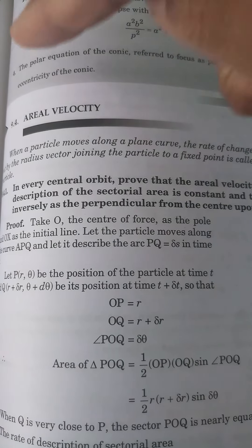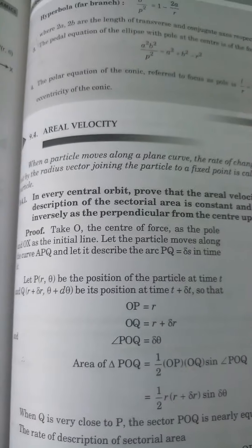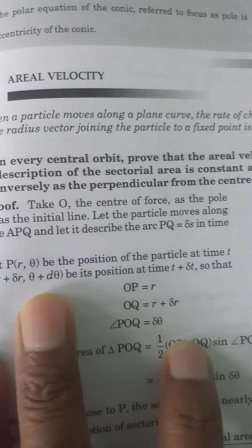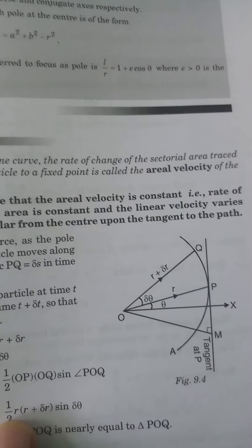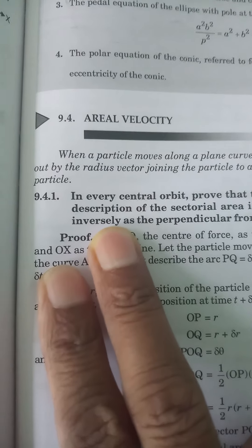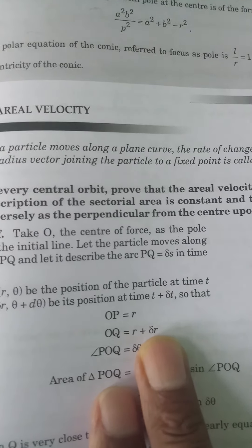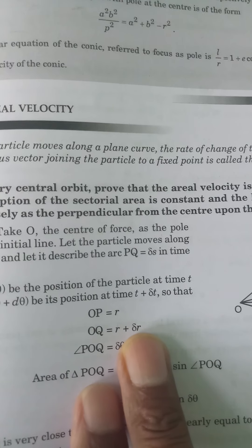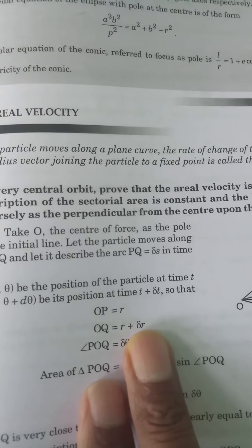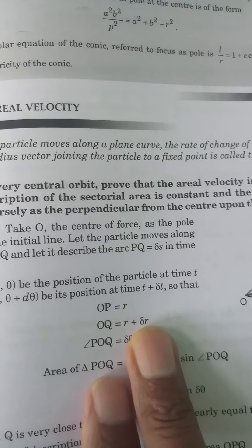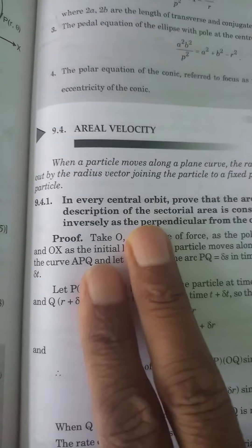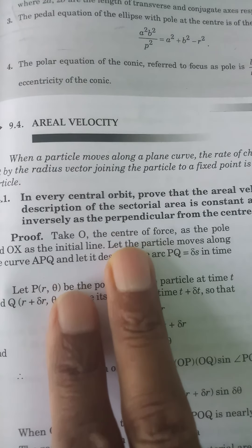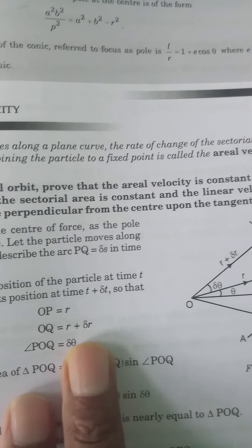In central orbit, I will cover aerial velocity and further topics. When a particle moves along a plane curve, the rate of change of sectorial area traced out by the radius vector joining the particle to a fixed point is called the aerial velocity of the particle.